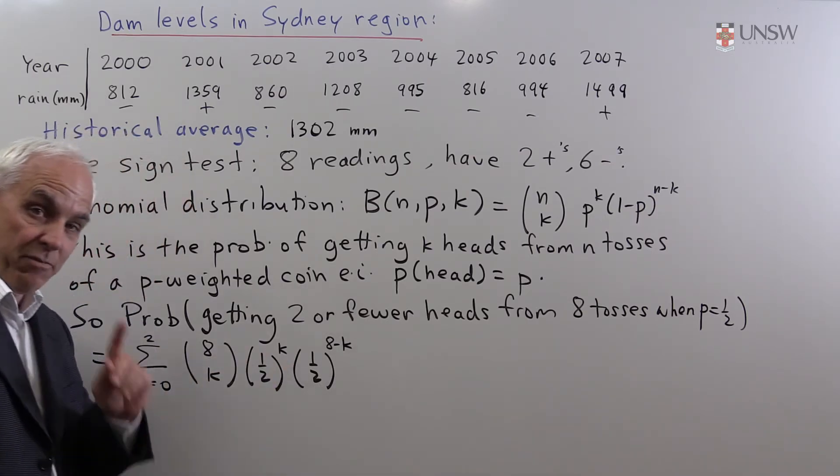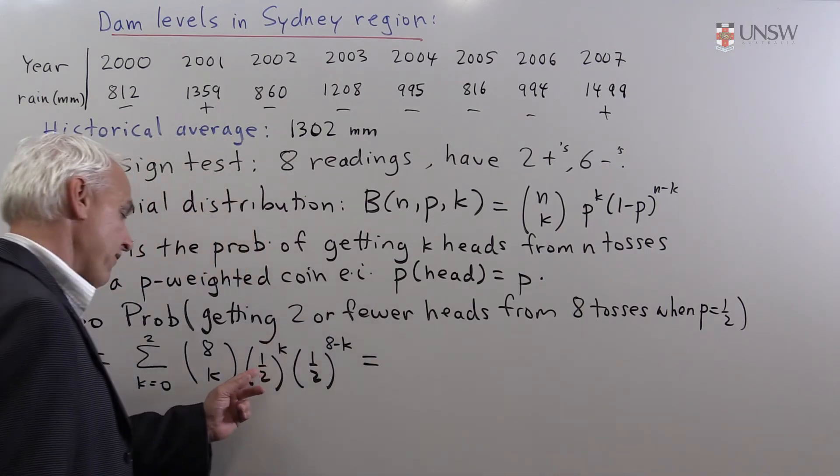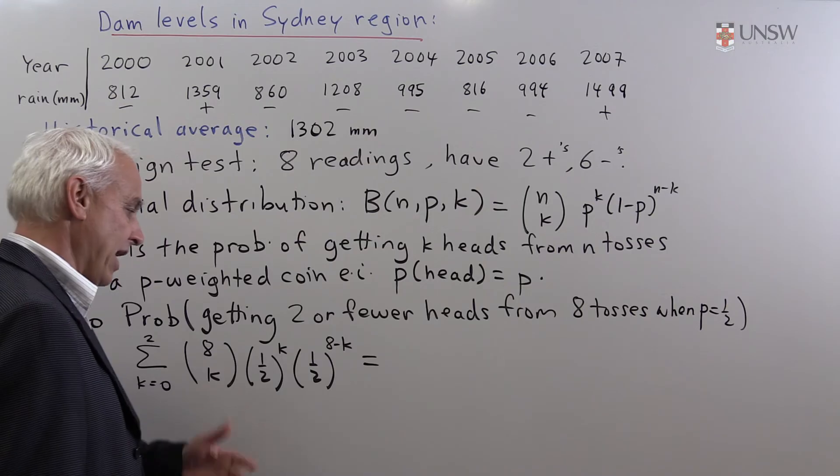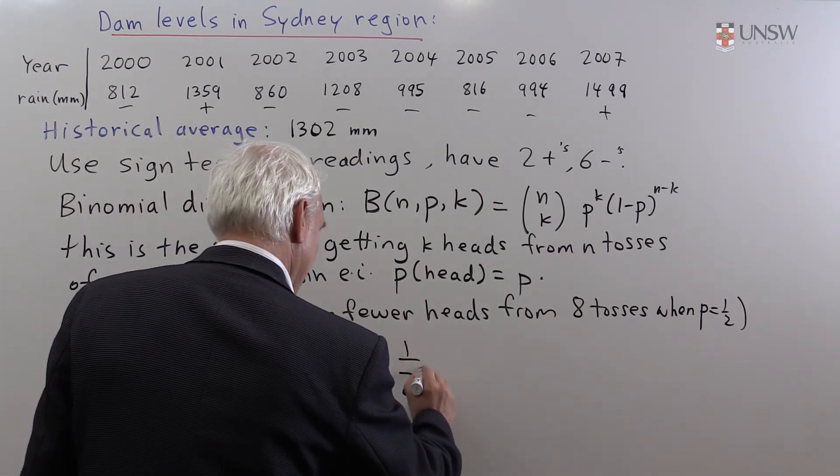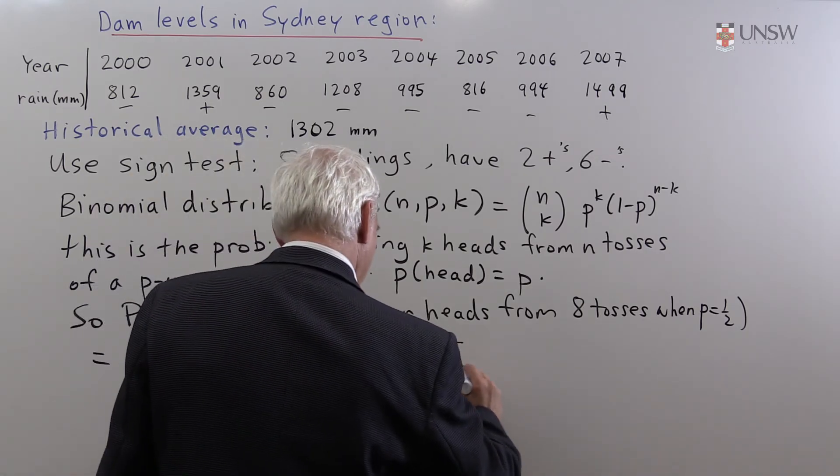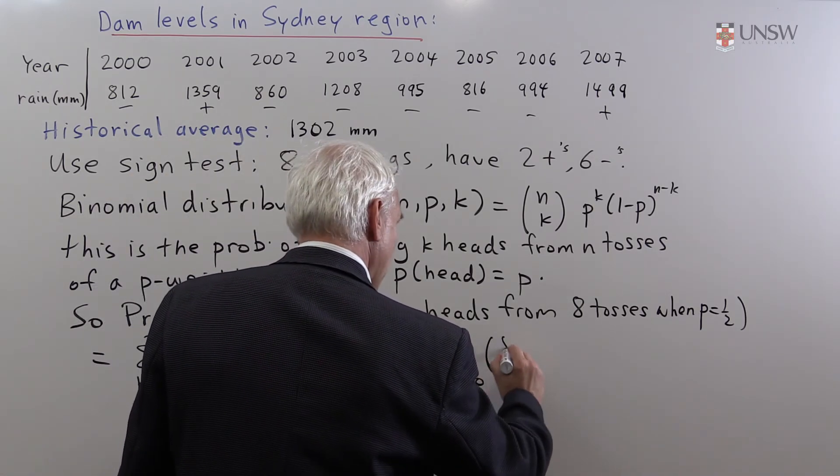Because of the special nature we have p equals a half, this simplifies because we have one over two to the k and one over two to the eight minus k. So altogether that's one over two to the eight. And that can come out front. And then we're talking about the sum from k equals zero to two of eight choose k.